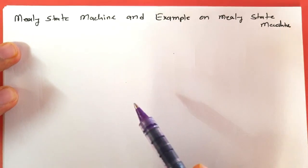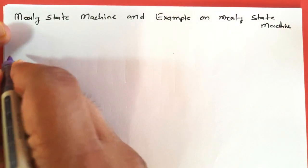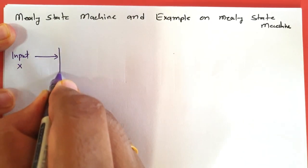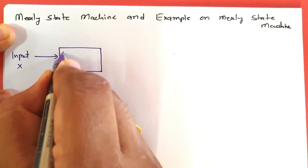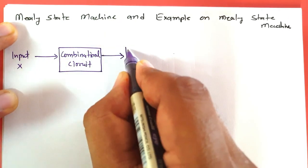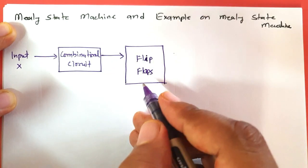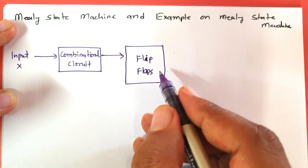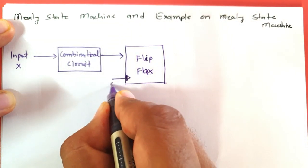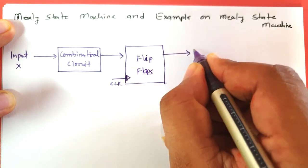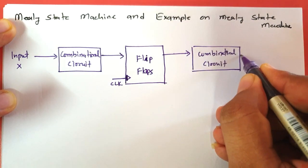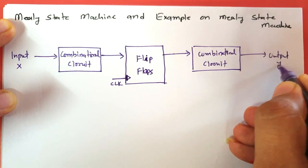To explain the Mealy State Machine, let me draw a basic block diagram first. Here we have input X that we give to a combinational circuit. The output of the combinational circuit is given to flip-flops, which will define the state of the machine. We also need to give a clock signal as input to the flip-flops. The output of the flip-flop is again fed back to the combinational circuit, and here we have output Y.